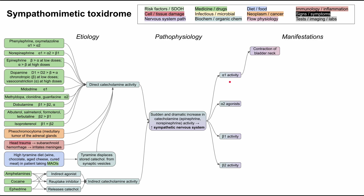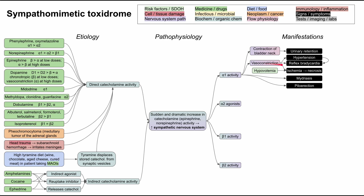Let's start with the alpha-1 receptor. It causes contraction of the bladder neck, which may manifest as urinary retention. It also causes peripheral vasoconstriction, which can lead to hypertension and a reflex bradycardia — an increase in blood pressure with a drop in heart rate. This vasoconstriction can also cause ischemia in the peripheries, mostly in the fingers and toes, which is particularly severe in hypovolemic patients and can lead to necrosis over time. Alpha-1 activity also causes mydriasis (pupil dilation) and piloerection.